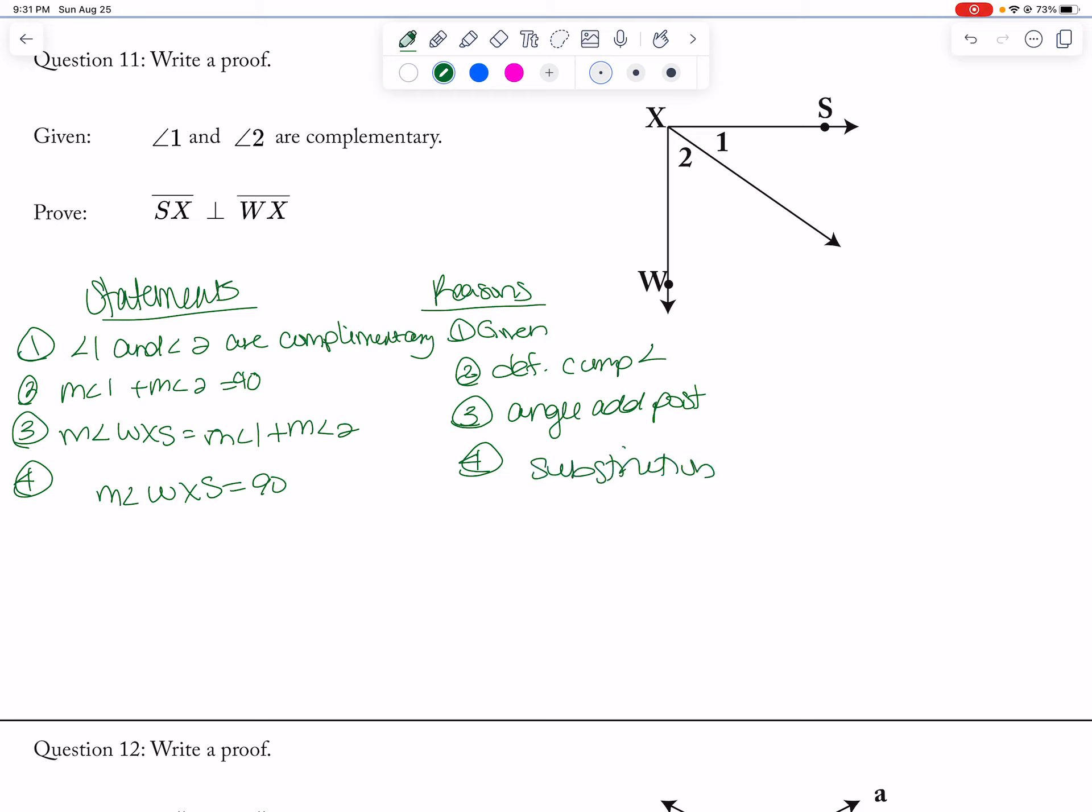And then angle WXS is a right angle, definition of right angle. And then 6: SX is perpendicular to WX, which is perpendicular lines form right angles. Alright, and that is it for all the odd-numbered questions.